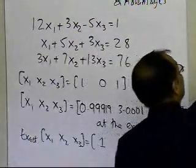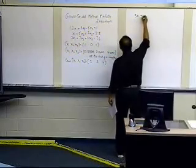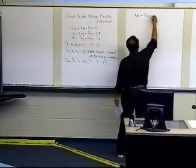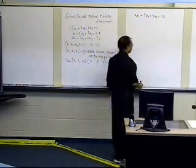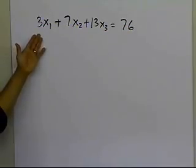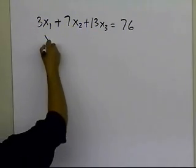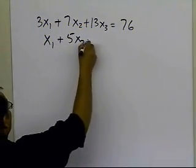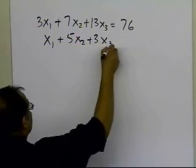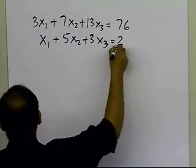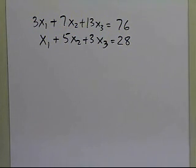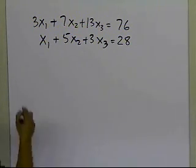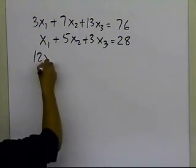So if I switch it, this is what I'm going to get, I'm going to get 3x1 + 7x2 + 13x3 = 76. This was previously the third equation, so I'm rewriting it as the first equation now. The second equation, or the middle equation, I'm going to leave it unchanged, I'm not changing any equations, I'm just going to leave it what it was. I'm going to take the first equation and show it as my third equation.